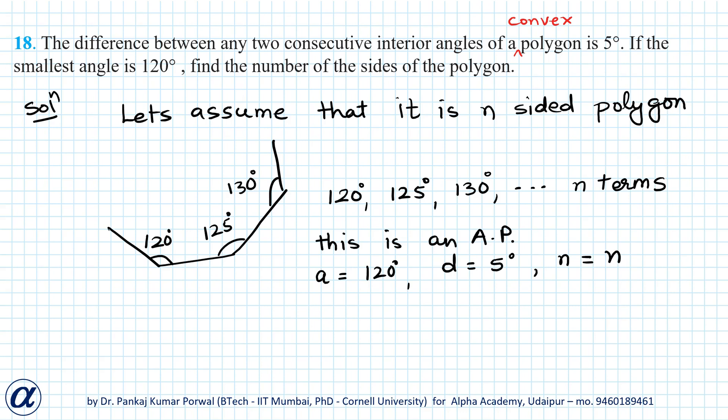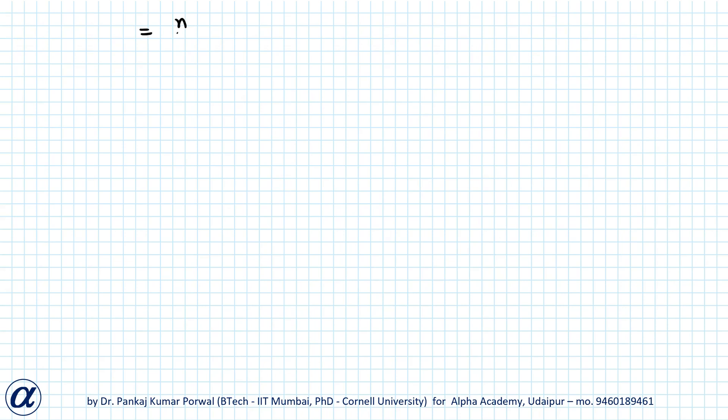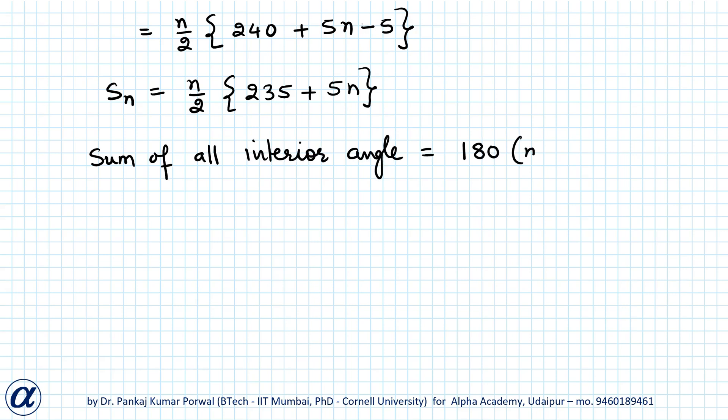The sum of this AP will be n by 2 times 2a plus n minus 1 into d, which equals n by 2 times 2 times 120 plus n minus 1 into 5. This gives me n by 2 times 240 plus 5n minus 5, which equals n by 2 times 235 plus 5n. We also know the sum of all interior angles for an n-sided polygon is 180 times n minus 2.